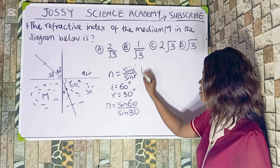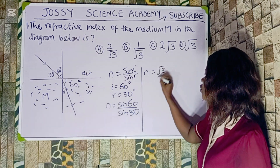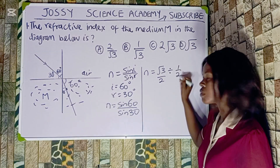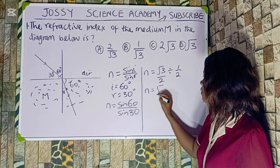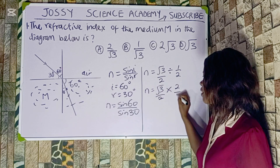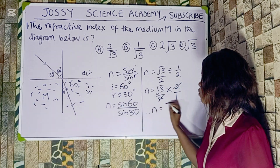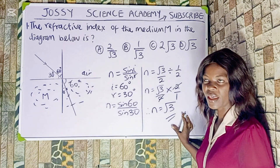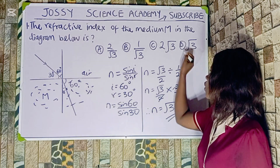So N is equal to sin 60, which is √3/2, divided by sin 30, which is 1/2. Proceeding, we have √3/2 multiplied by 2/1. The 2s cancel, giving a refractive index equal to √3. Remember, it is a constant and has no SI unit. The correct option to this question is option D.